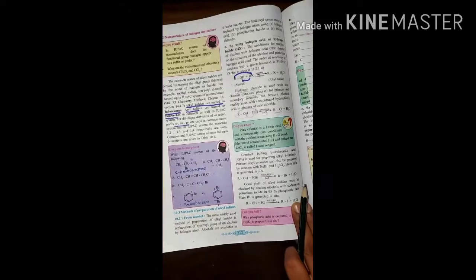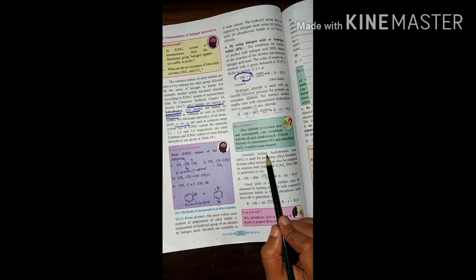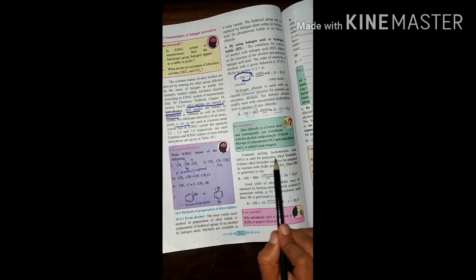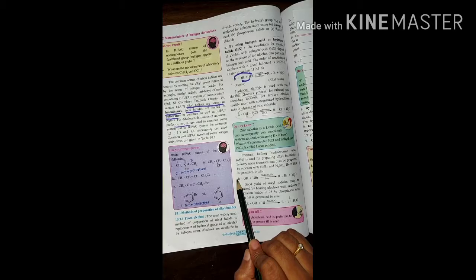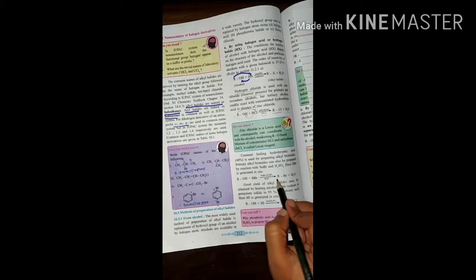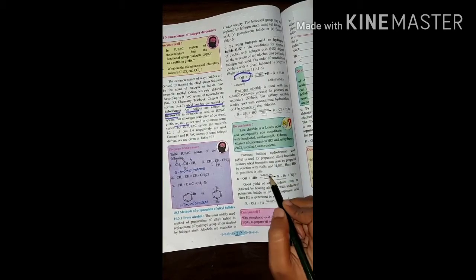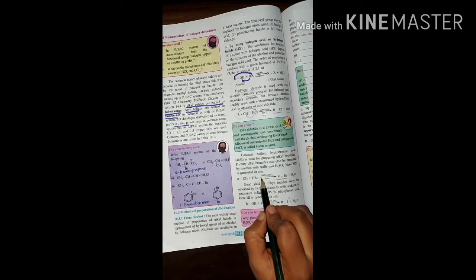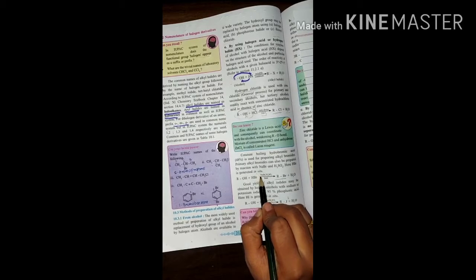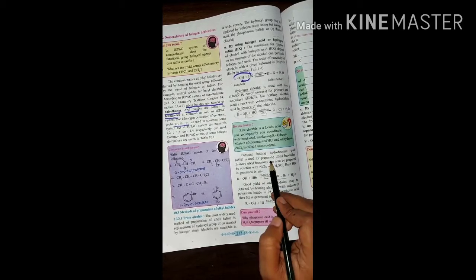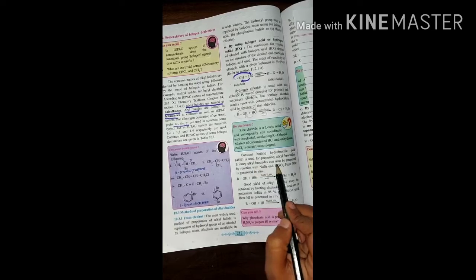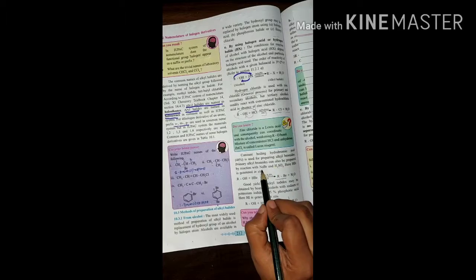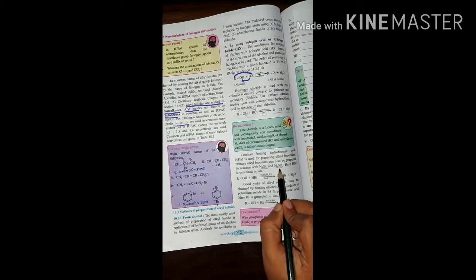Next, constant boiling hydrobromic acid, 48%, is used for the preparation of alkyl bromides RBr. The reagent is hydrobromic acid. Primary alkyl bromides can also be prepared by the reaction of NaBr and H2SO4. These reagents are very important.